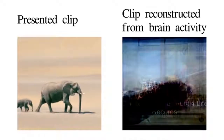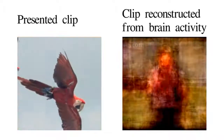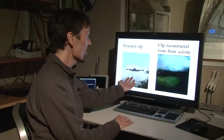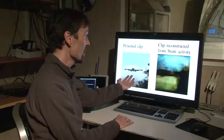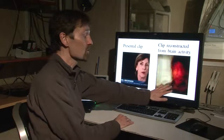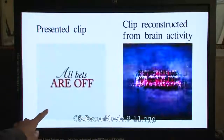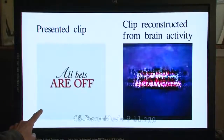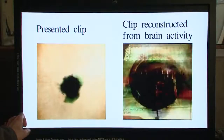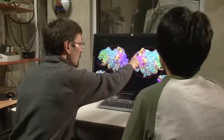On the left here is the movie we actually showed people, and on the right is our reconstruction. When the movie that we showed has a fairly common object, like a person, our reconstructions are actually fairly accurate. When the movie that we showed is something rarer, like this abstract thing, then our reconstructions are coarser.